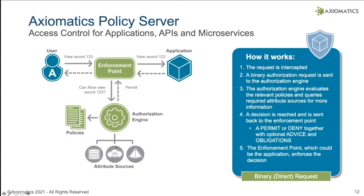This is what makes our system very dynamic. The enforcement point doesn't need to know what the policies need to answer the question. It just provides the key information: the user's identity, the identifier of the resource, and what are they trying to do to it — view it, edit it, update, delete. The engine then evaluates it against that policy. And if that's a match — if Alice is in the same department as the record — they get a permit back.